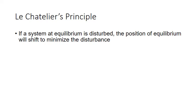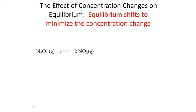One way to disturb a system at equilibrium is to add or remove some of the reactants or products to change the concentrations. Let's look at the reaction between dinitrogen tetroxide and two molecules of nitrogen dioxide. When the system is at equilibrium, we have steady state levels for the reactants and products. Now we're going to disturb this system by adding additional NO2 to those steady state levels.